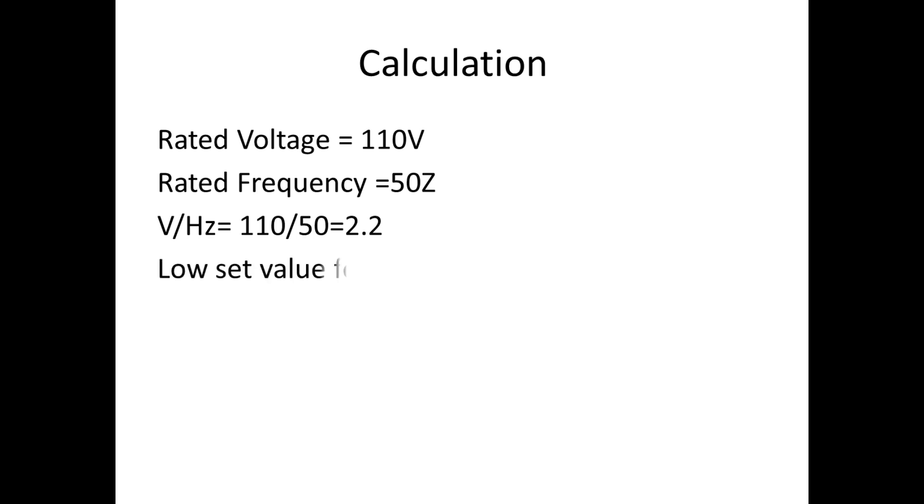Now for low set value, as per the relay settings, it was 1.1. So the V/f Hz at low set equals 2.2 × 1.1, we get 2.42 value, which is M low set value. If I am going to test the over flux for 120%, then the V measured and frequency measured we can equate with M excitation.